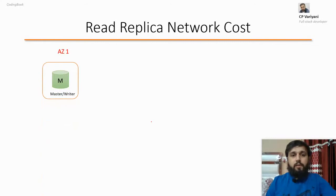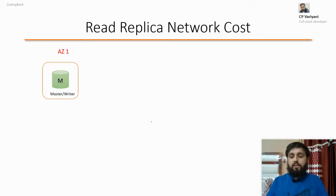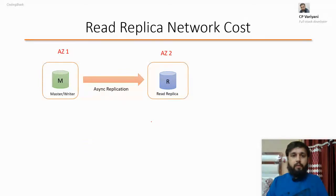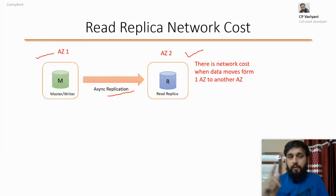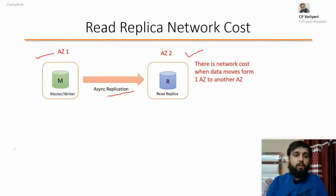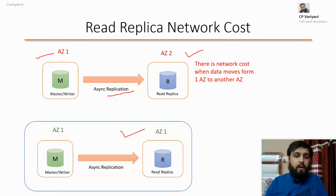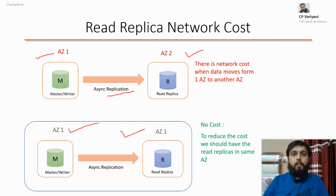Now, why not always create read replicas? Everything is paid here — for everything you purchase, you need to pay. Let's understand read replica network costs. Suppose you have a writer in availability zone one and you create a read replica in availability zone two — there will be async replication and a network cost because data is moving from one location to another. But if you create a read replica in the same availability zone, you do not need to pay any additional cost — it would be free. So depending on your need, you can decide where to create the read replica.